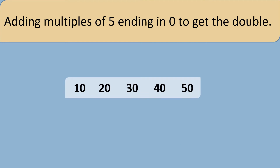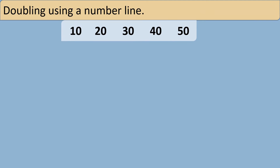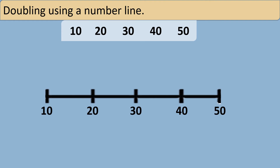Let's see how we can add these multiples of 5 which end in 0 to get double. Let's see how we can double these numbers using a number line.